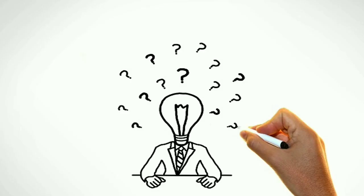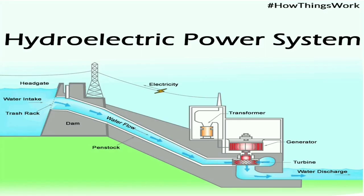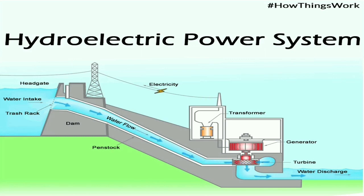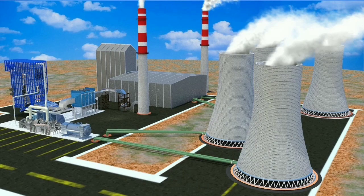This increases our curiosity to know about the production of electricity. Electricity is produced in hydropower plants where the flow of water is used to rotate the turbines to produce electricity. In thermal power plants, the heat produced by the burning of coal is used to produce steam which turns the turbines to produce electricity.